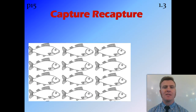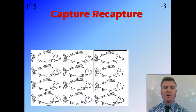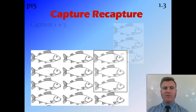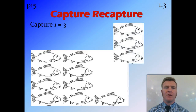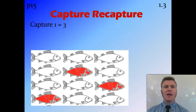The maths can be a little bit complicated, so I'll go through that now. Here we have a population of fish. We don't know how many fish there are, because they're in the water and we can't get them to count them. So what we do is we first capture our original sample. I've put in a net and caught three fish, and I'm going to mark these three fish to show that they've been caught already.